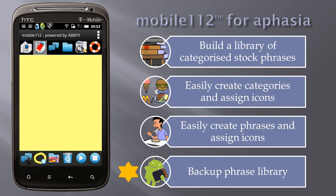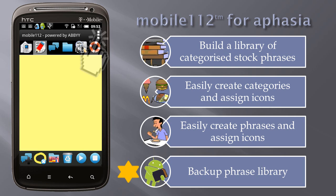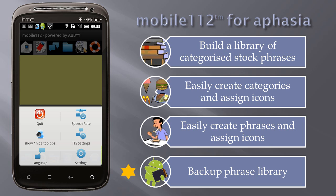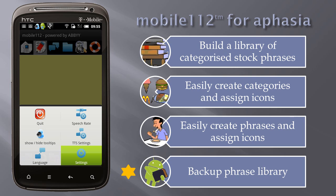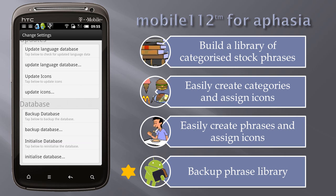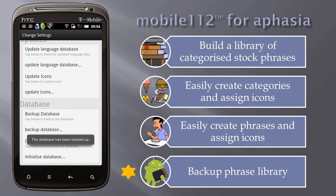Backup your phrase library database to your SD card. Tap the Android menu key on your phone or tablet, or use the on-screen option on some Android devices. Tap the settings option, scroll down to the backup section, and choose backup database. After a confirmation message, the database will be backed up to the Mobile112 folder on your SD card.